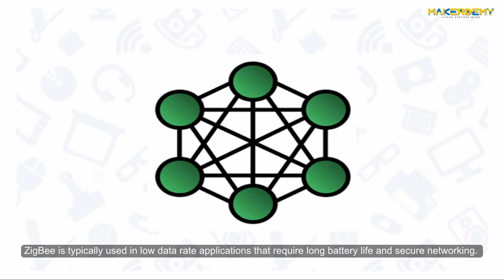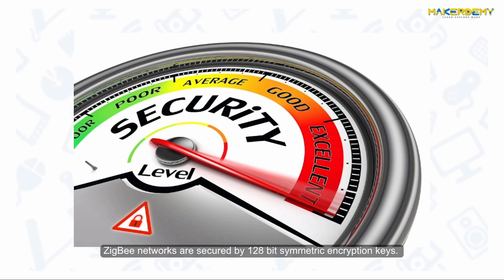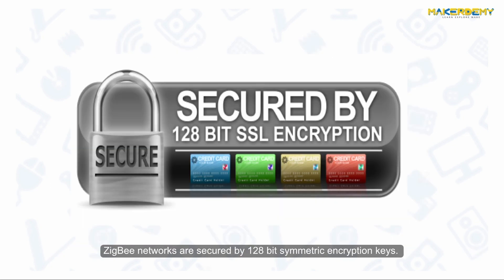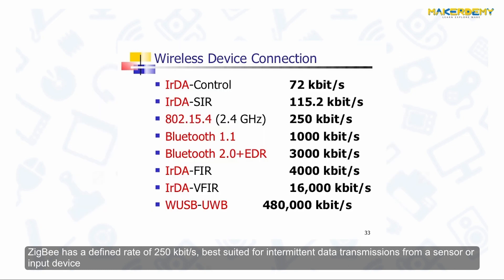Zigbee is typically used in low data rate applications that require long battery life and secure networking. Zigbee networks are secured by 128-bit symmetric encryption keys. Zigbee has a defined rate of 250 kilobytes per second, suited for intermittent data transmissions from a sensor or input device.